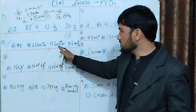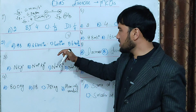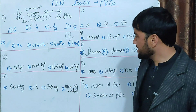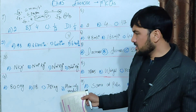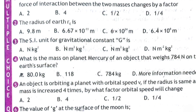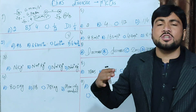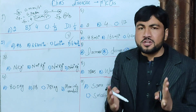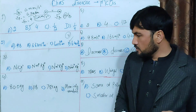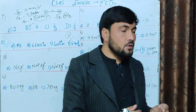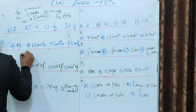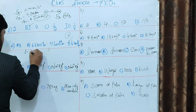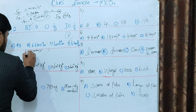Option A refers to gravitational acceleration, option B refers to the gravitational constant, option C refers to the mass of the Earth. The correct answer is option D. Now checking the unit of gravitational constant G from the gravitational force equation F = GM1M2 / r².